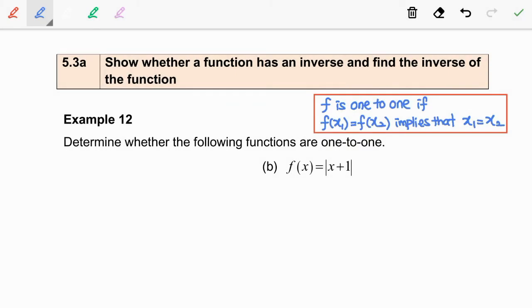Next, question B: given the function f is absolute value of x plus 1. Now, we are going to let f(x1) is equal to f(x2). On the left-hand side, we are going to replace x1 into the function f. We have absolute value of x1 plus 1.